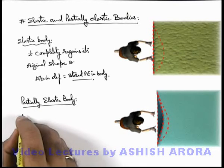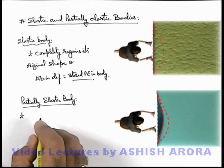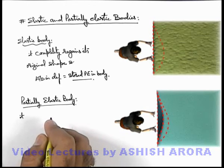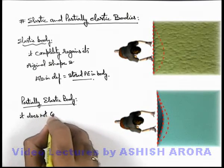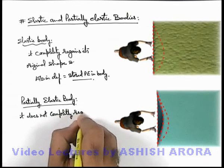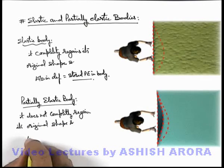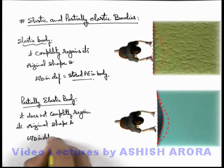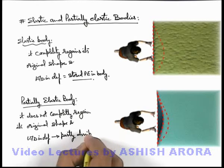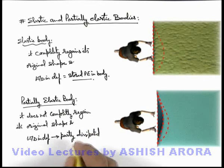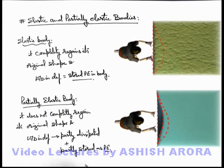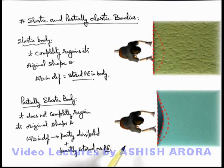So we can say a partially elastic body is the one that, on removal of external force, does not completely regain its original shape. The work done in deformation is partly dissipated, which can never be regained back, and partly stored as potential energy in the deformation of elastic forces of the body. So a partially elastic body is one in which the shape is not completely regained, as some energy is lost during deformation which can never be recovered back.